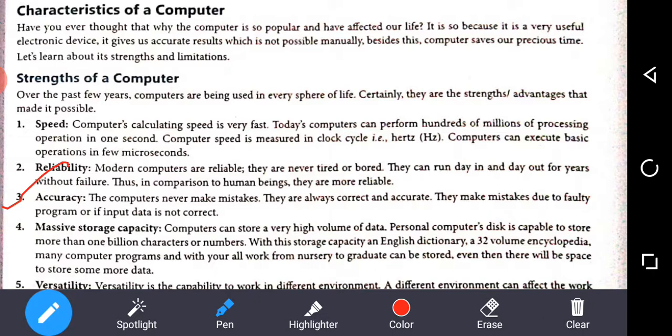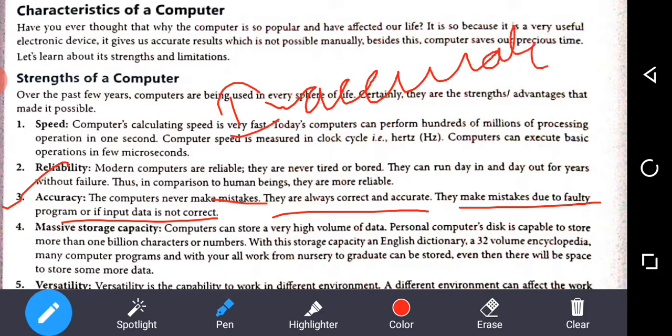Next is accuracy. The computer never makes mistakes. They are always correct and accurate. They make mistakes due to faulty program and if input data is not correct. The computer will give inaccurate results only when you have wrong input or wrong program.